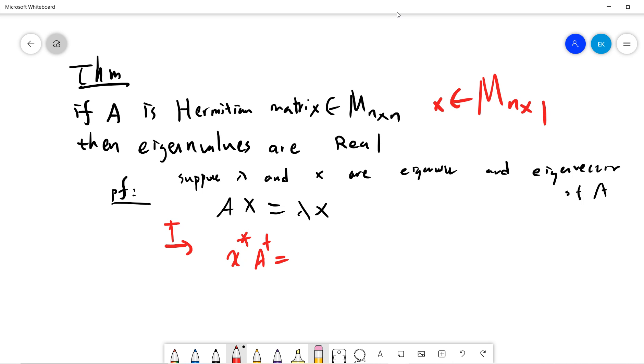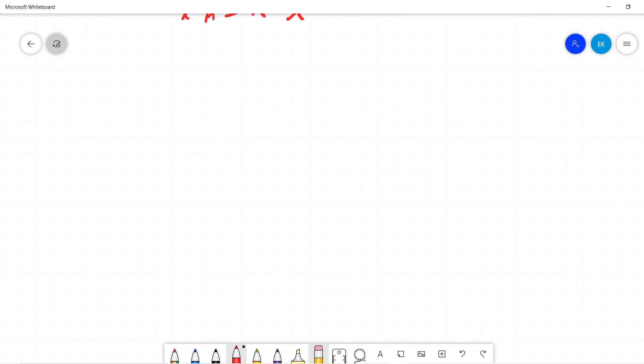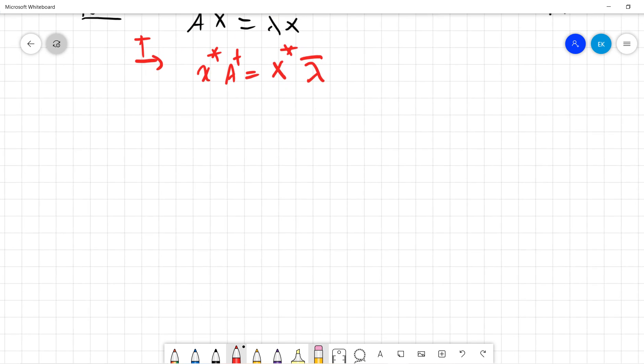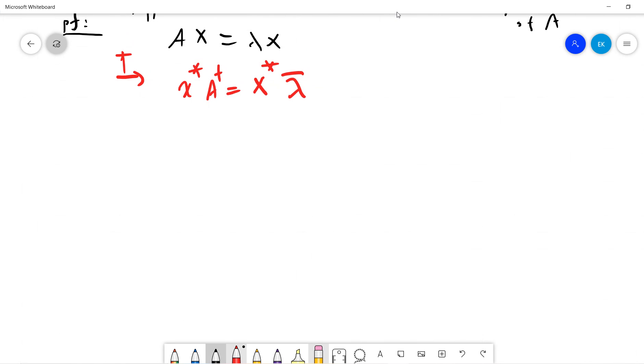So this is x lambda bar, which means that Ax is lambda x and A dagger is A, right? So we have this.